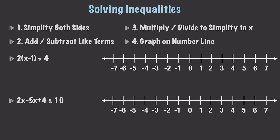Let's take our first example. We use the distributive property first, so we get 2x minus 2 is greater than 4. Then we add 2 to both sides of our inequality, ending up with 2x is greater than 6. Then we divide by 2 on both sides to get x is greater than 3. We find our 3 on the number line, it's just greater than so we circle it, and draw the line in that direction.